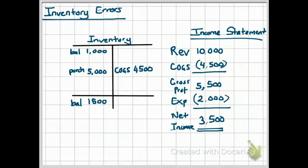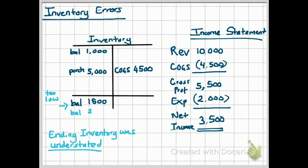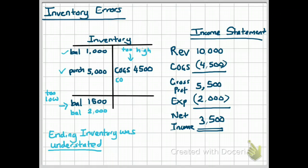Now let's take the same data and look at another error. This time, we'll see what would be the effect if our ending inventory was understated. Understated means that our ending inventory is too low — it should have been higher. I'm going to tell you that it should have been $2,000 instead of the $1,500 shown. Again, we assume that our beginning balance and purchases are correct, which means our cost of goods sold is wrong. Cost of goods sold should be $4,000, so our cost of goods sold shown in the inventory account is too high.